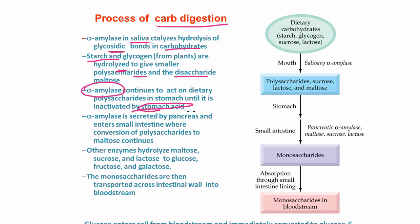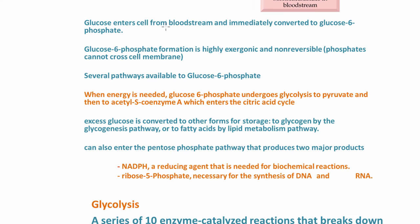Alpha amylase continues to act on polysaccharides in the stomach until it is inactivated by stomach acid, because enzymes are proteins and proteins denature in an acidic environment. Alpha amylase is also secreted by the pancreas and enters the small intestine, where conversion of polysaccharides to maltose continues. Other enzymes hydrolyze maltose, sucrose, and lactose to glucose, fructose, and galactose. The monosaccharides are then transported across the intestinal wall into the bloodstream.